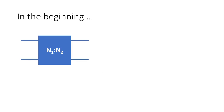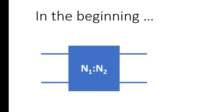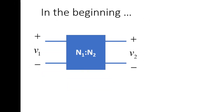In the beginning, we introduced the ideal transformer as a two-port network, a magic box with a number in it, N1 over N2. Those are just two numbers divided to give us the ratio of the transformer. When we applied a voltage V1 on the left port, with polarity positive at the top, a voltage V2 appeared on the other port, also positive at the top, related by V1 to V2 as N1 to N2.